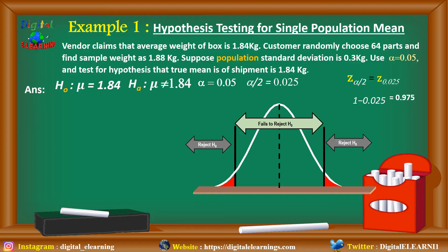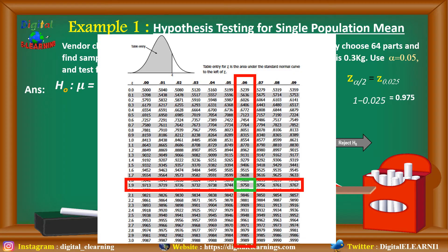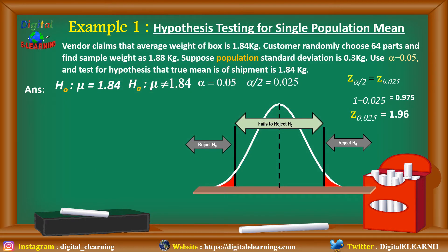For Z equal to 0.025, we calculate from the Z table. We first subtract 1 minus alpha by 2, that is 1 minus 0.025, giving us 0.975. We find this value of 0.975 in the Z table — it corresponds to 1.9 on the horizontal and 0.06 on the vertical, combining to give 1.96. That is the Z critical value, so we place minus 1.96 and plus 1.96 on the curve since it is a two-tailed test.